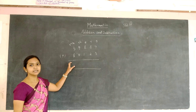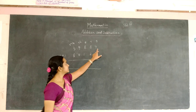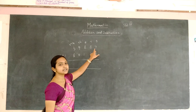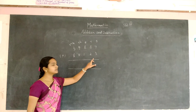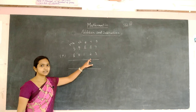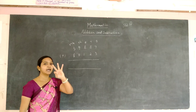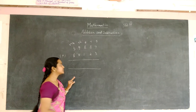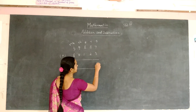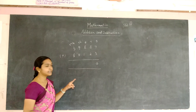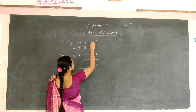Now we are going to add these two numbers. We are going to add 7 and 3. Add 7 plus 3: that is 8, 9, and 10. So write 0 in the 1's place and the 1 is carried to the 10's place.